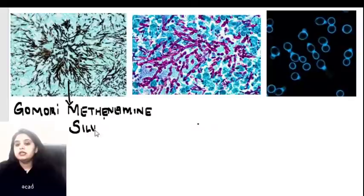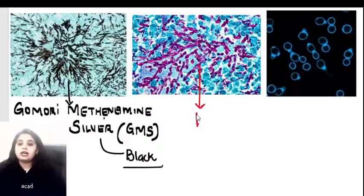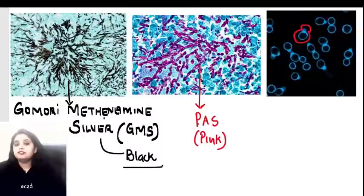The Gomori Methenamine Silver stain, also known as the GMS stain - whenever a silver stain is used, by default the product color is going to be black. Fungus becomes pink in color when I use a PAS stain. PAS makes the fungus pink in color.